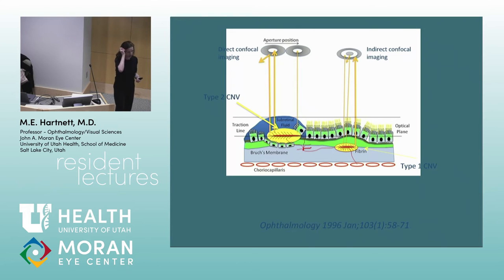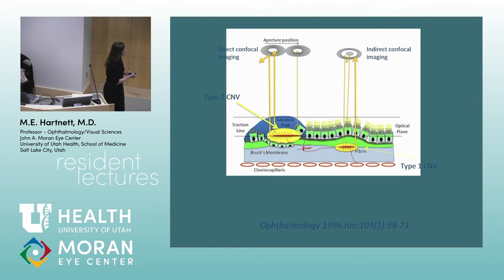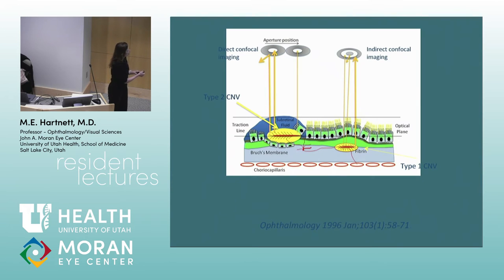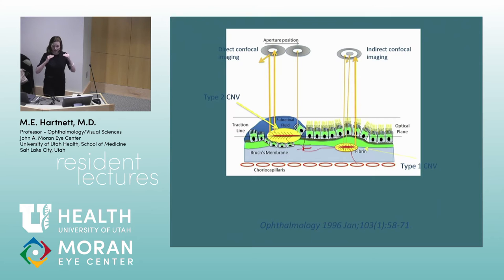The scanning laser ophthalmoscope scans light across the macula and detects reflected light in a certain optical plane — the confocal mode. This is good at picking up type 2 CNV that has broken through Bruch's membrane and the RPE barrier into the neurosensory retina. But for CNV underneath the RPE, confocal imaging misses it. Using a stop aperture to block direct reflected light, you detect light from deeper retinal layers or laterally scattered light, allowing detection of sub-RPE CNV.